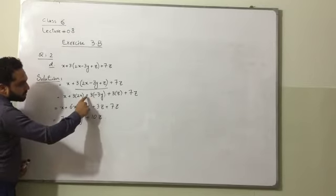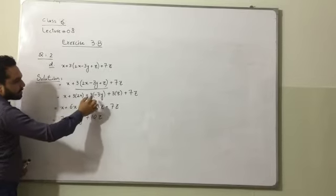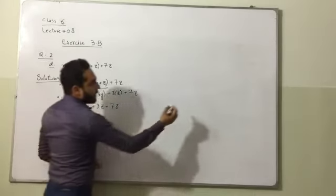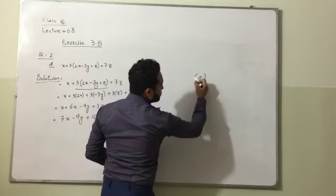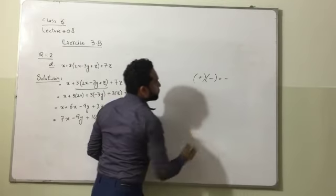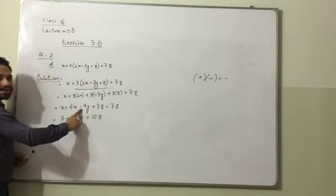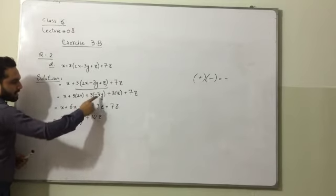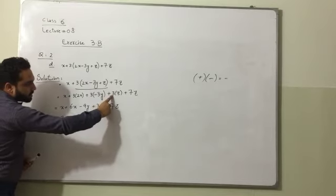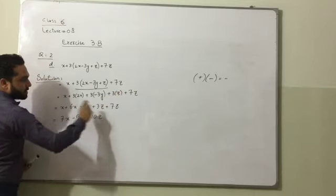And here we can see there is a positive sign with 3 and negative sign with 3y. So when we multiply plus with minus, we know that plus multiplied by minus is equal to minus. So this will become plus minus, minus. 3 times 3 is 9 and y will remain same. So this is 9y plus. When we multiply 3 with z, this will become 3z, and plus 7z will remain same.